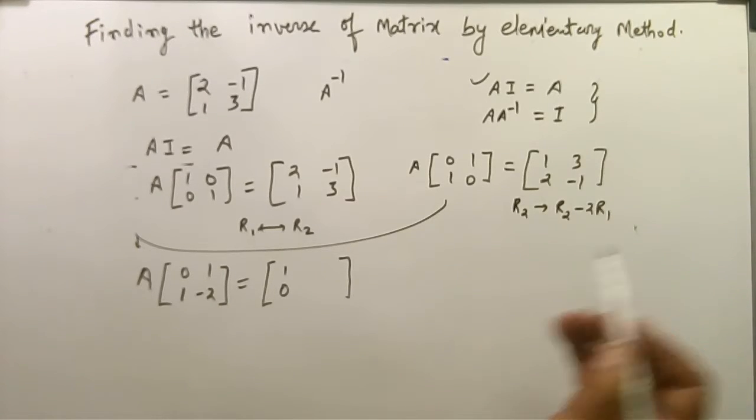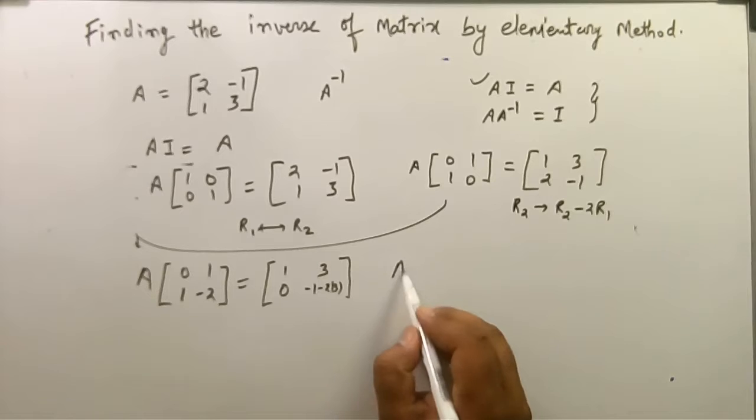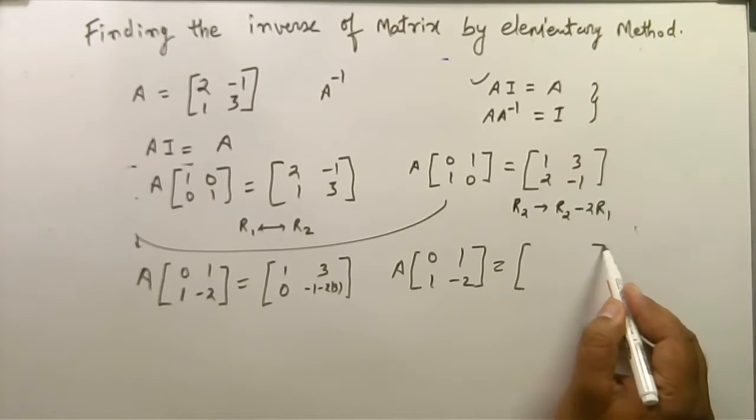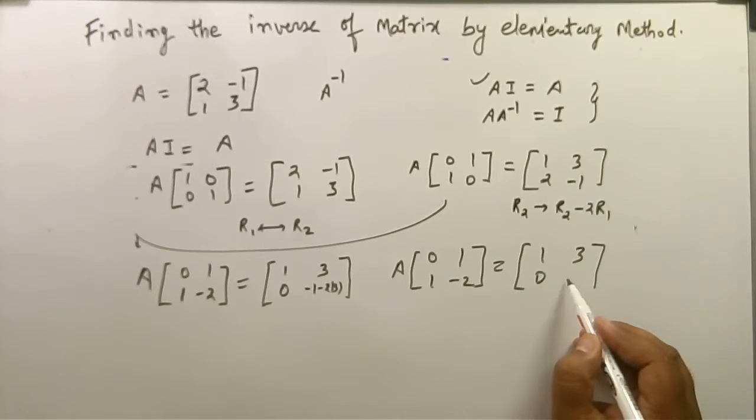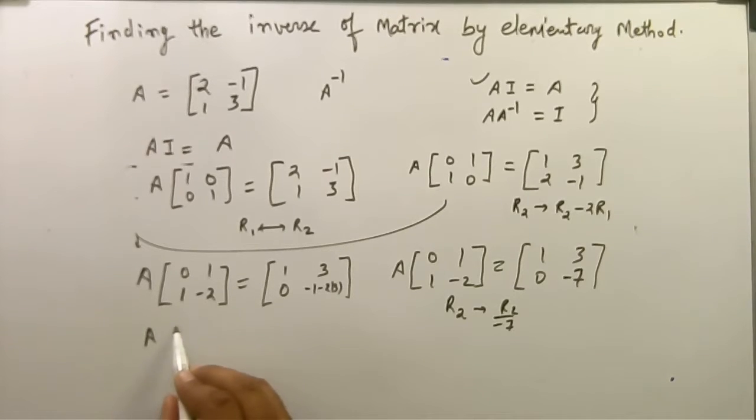1, 0, minus 1, minus 1, or minus 2 into 3. Zero, 1, 1, minus 2, 1, 3, 0, minus 7. Two minus seven plus seven, minus 1, minus 7, and here it is 1, 3, 0, 1.